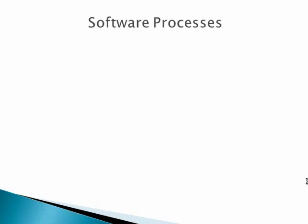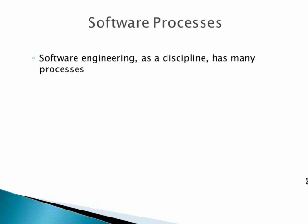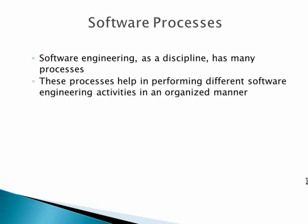Now we are going to discuss what software processes are. Software engineering as a discipline has many processes, and these processes are used in different ways, at different times, and in different scenarios. These software processes consist of a well-organized set of activities or steps used to perform various software engineering activities.